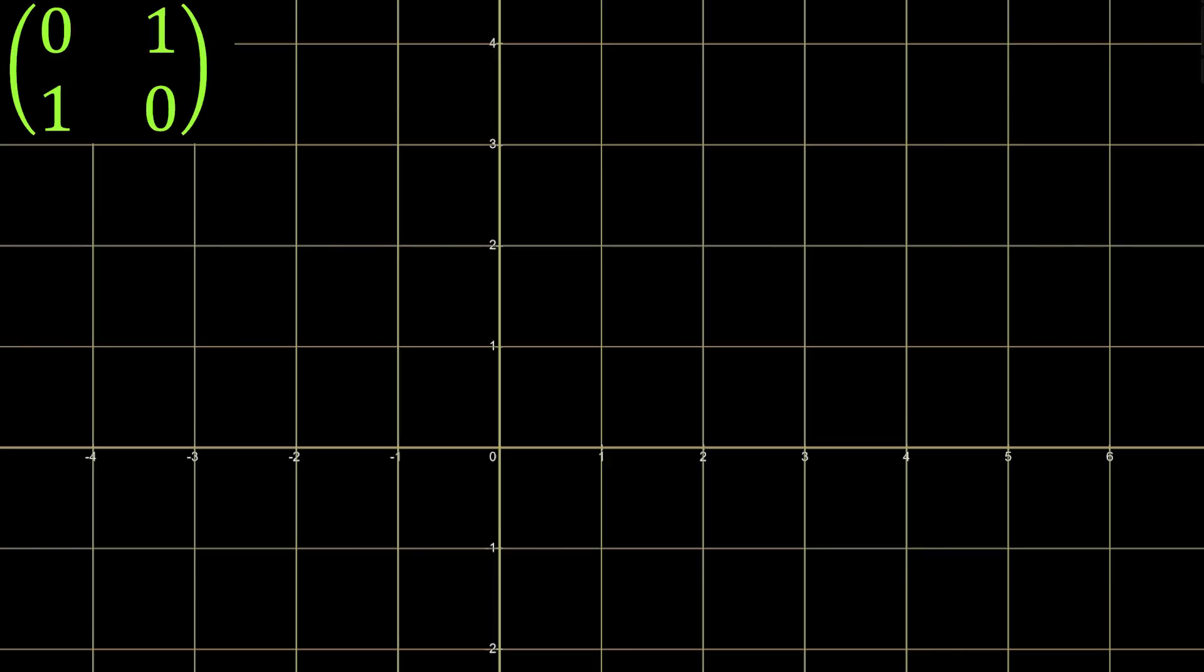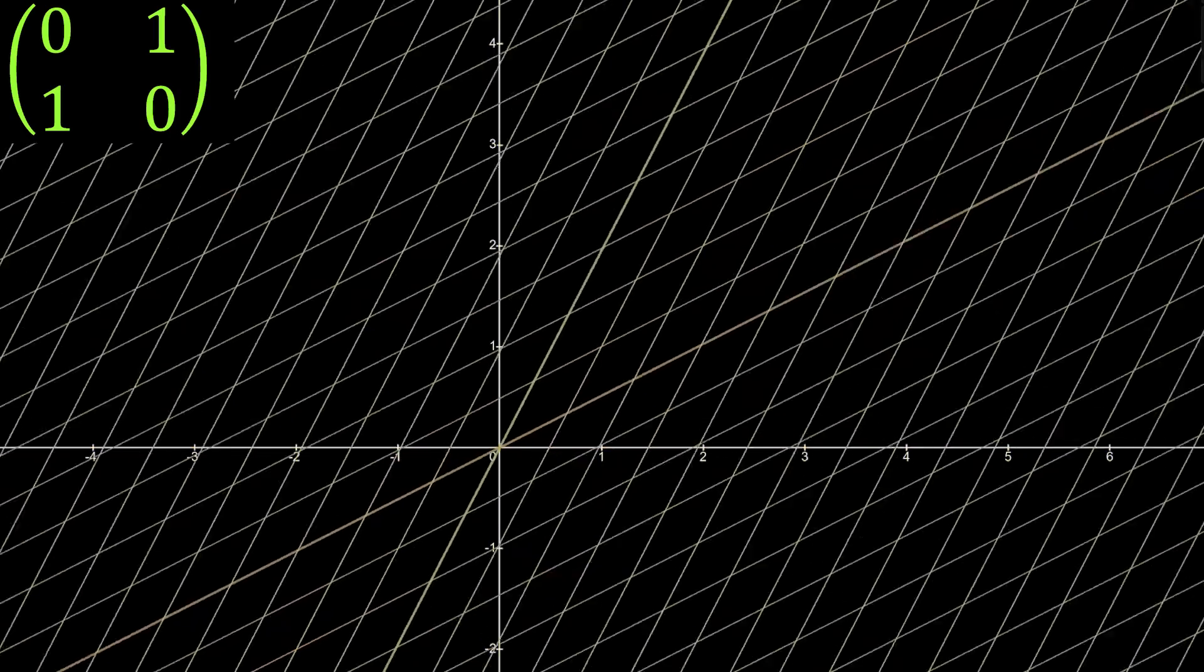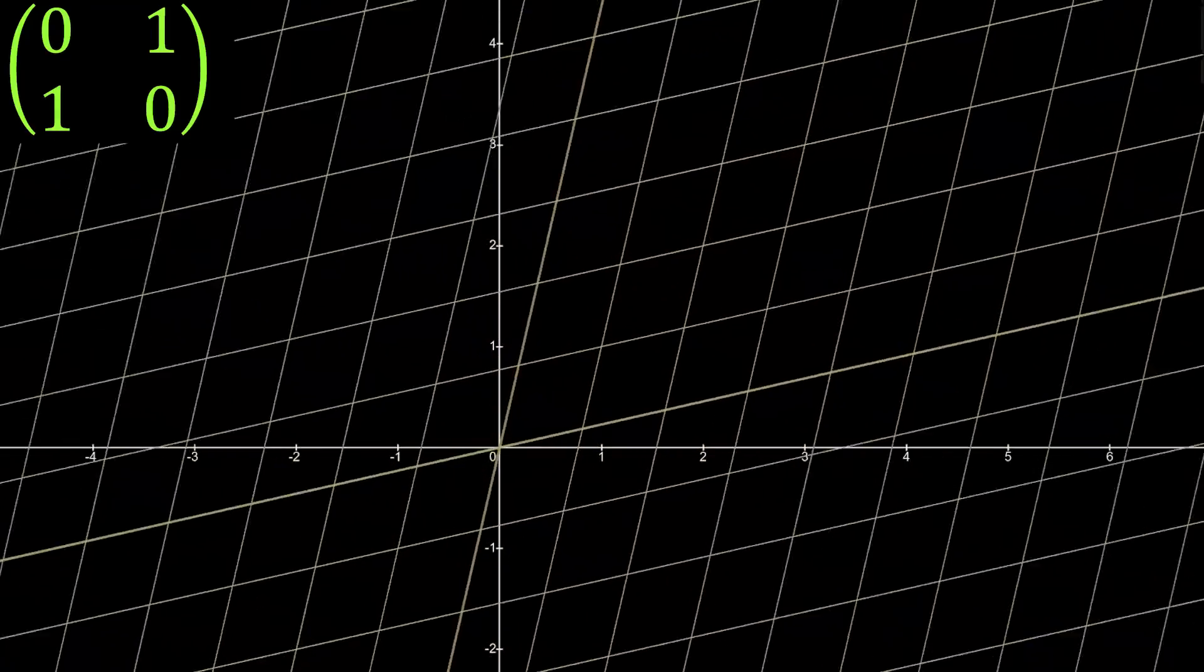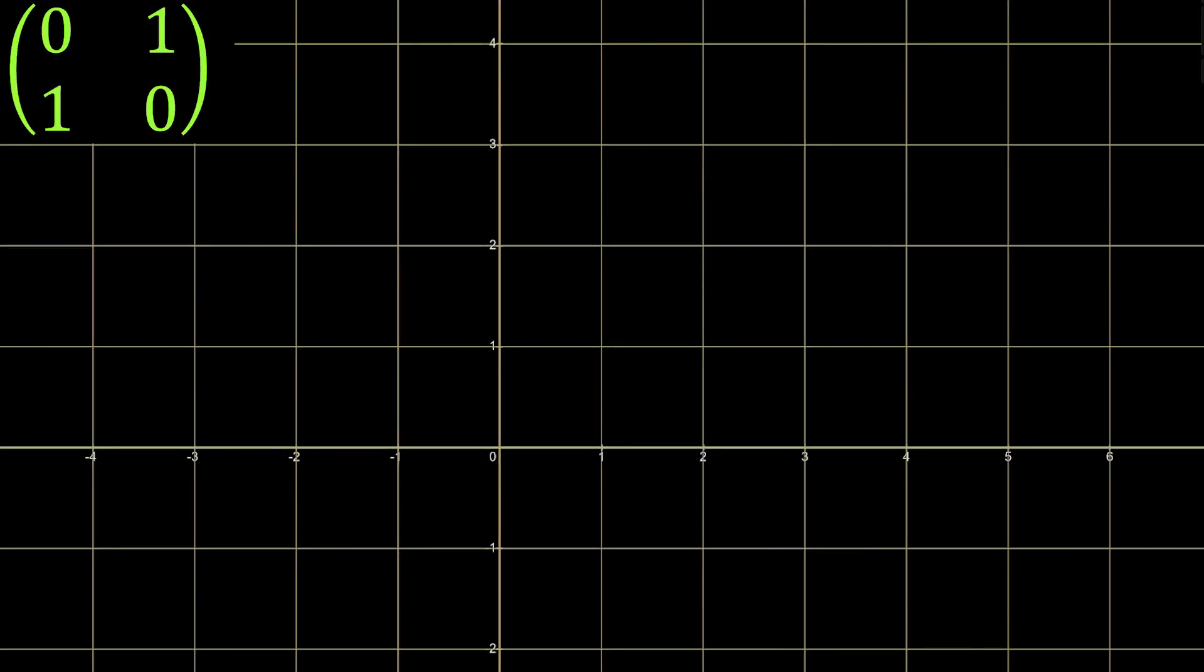If instead I switched row one and row two, alternated their order, the visual effect is quite pleasing. It's one where all of the horizontal lines flip to be vertical lines and vice versa.